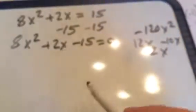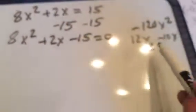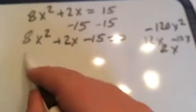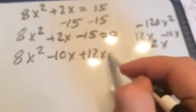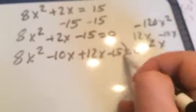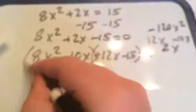We're going to split our middle term and use these two new terms that we created. So 8x squared minus 10x plus 12x minus 15 equals 0. We're going to factor by grouping.